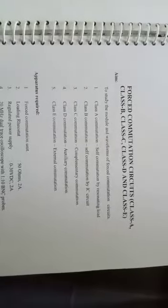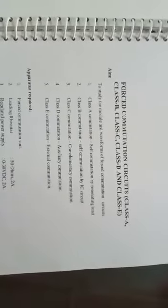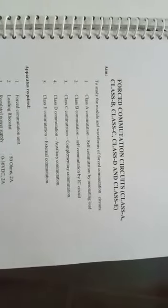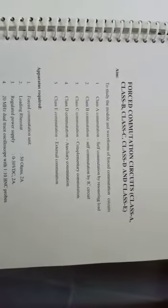Forced commutation circuits means we are turning off the thyristor forcefully. We have two types: natural commutation and forced commutation. Natural commutation is when we are giving AC supply and turning off the thyristor — that is natural commutation. Forced commutation is when we are giving DC supply and we want to turn off the thyristor forcefully. With DC supply it takes so much time and many challenges occur, which is why we need forced commutation.